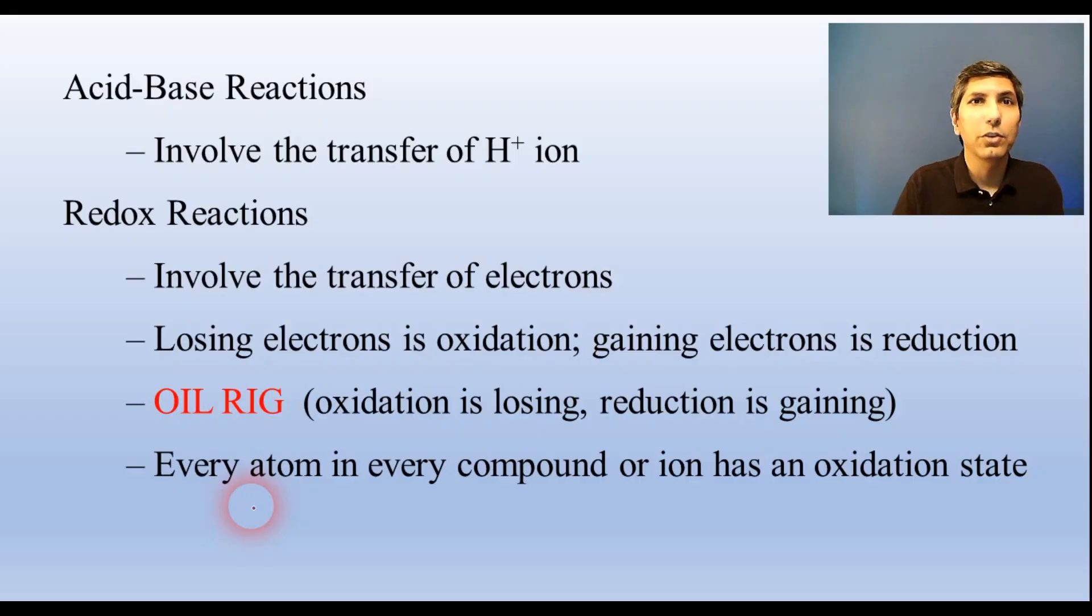Be able to determine the charge or oxidation state of any atom in a species. Here are some of the basic rules of thumb. In some species, it's not obvious what the oxidation state of the element is, like the nitrogen here in nitrate. So here we'd use algebra to solve. Oxygen is nearly always negative 2 in a compound. And if the whole ion adds up to negative 1, then nitrogen has to be positive 5.